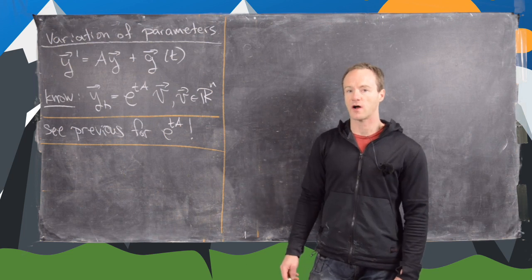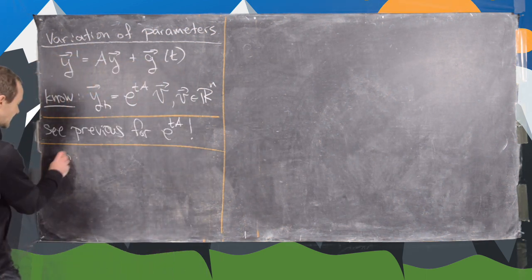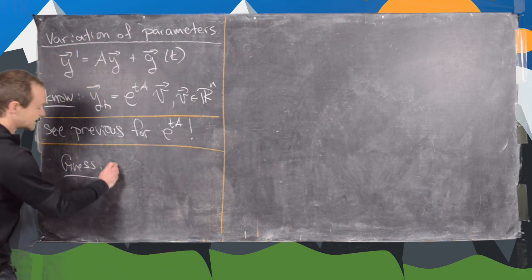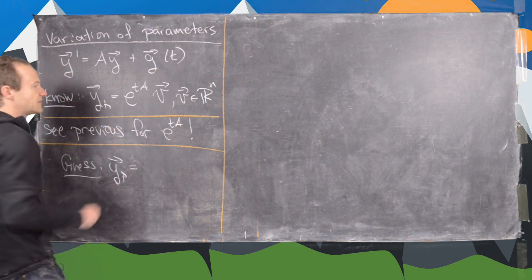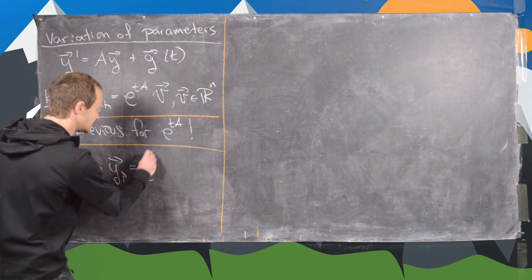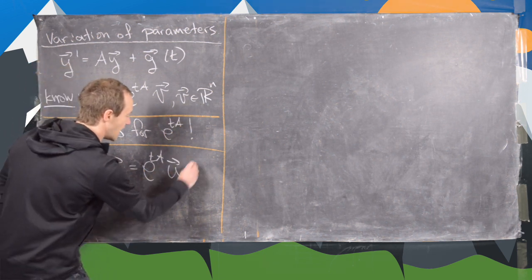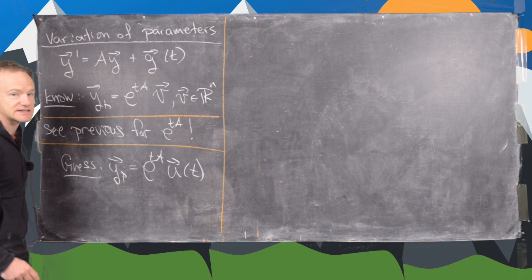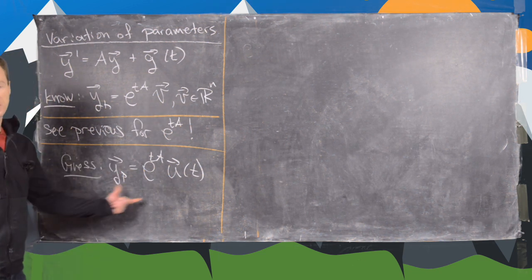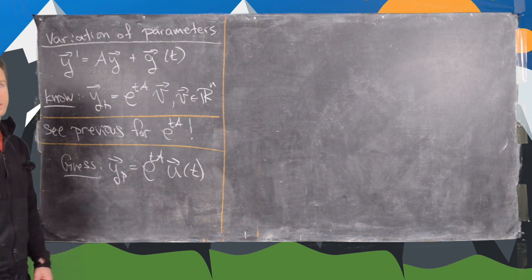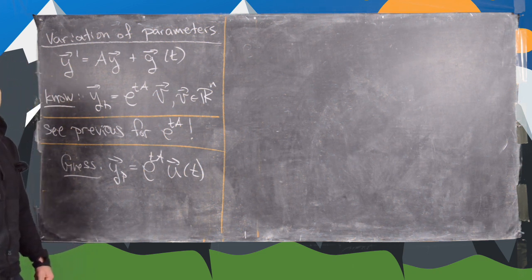If you recall from variation of parameters for a single differential equation, what we do is guess that our particular solution y_p will be given by something like our homogeneous solution — e^(tA) — but then multiplied by u of t. Now u of t is a vector valued function instead of just a vector of numbers. We guess this type of solution and then see what form u of t has to take on in order for this to work.